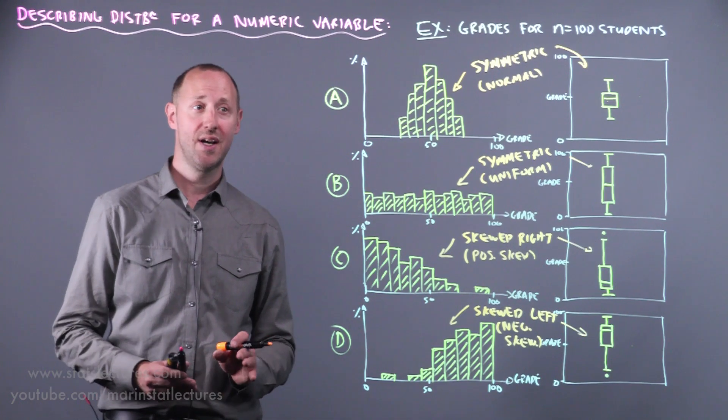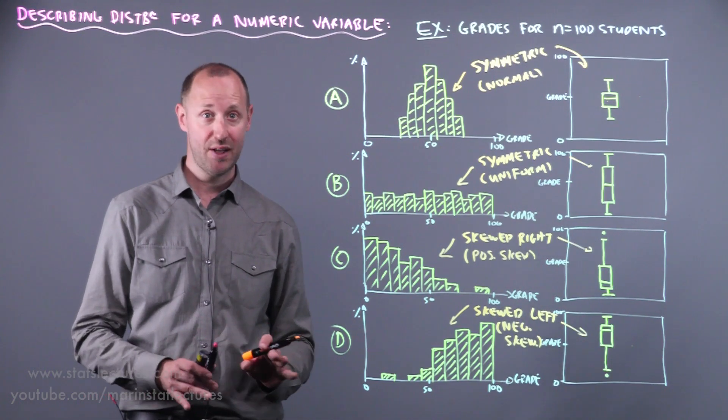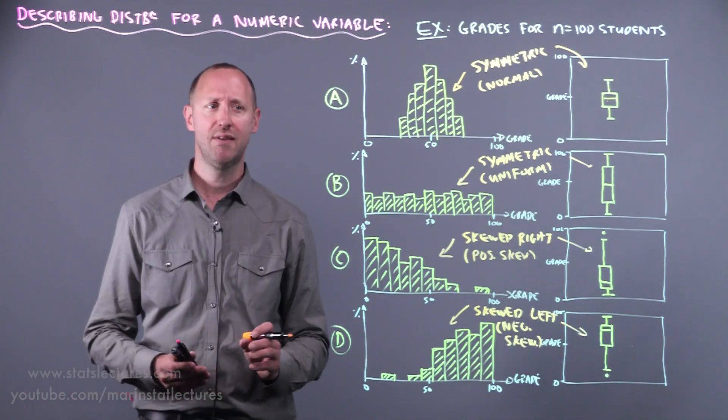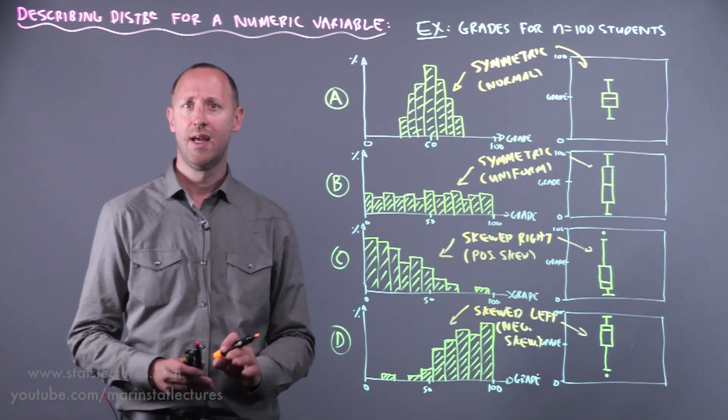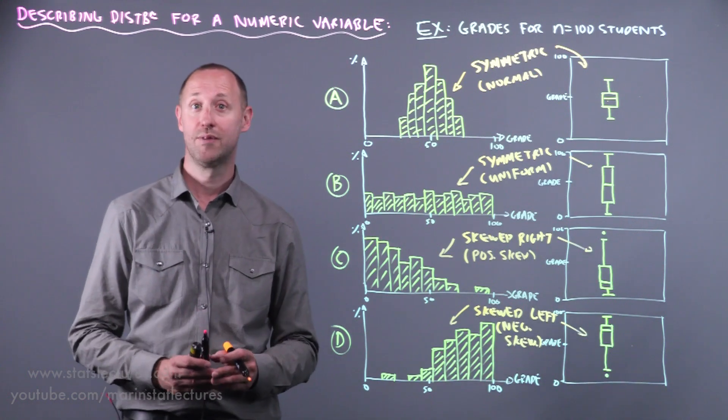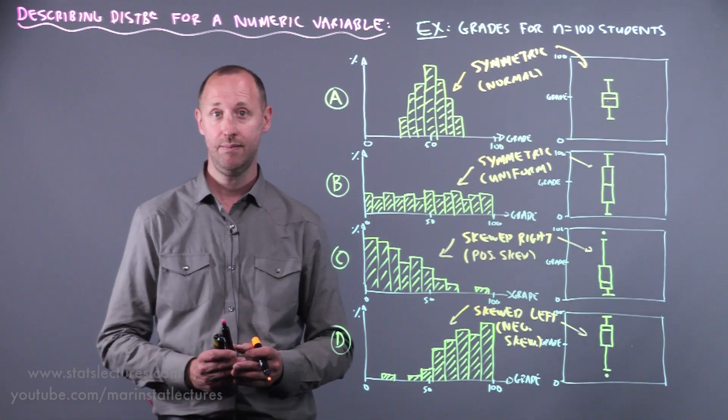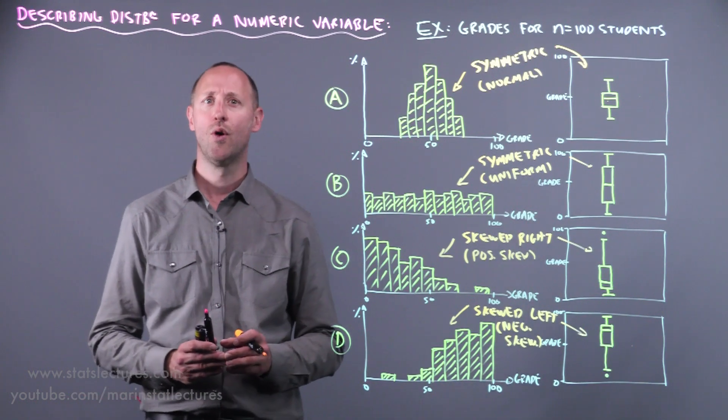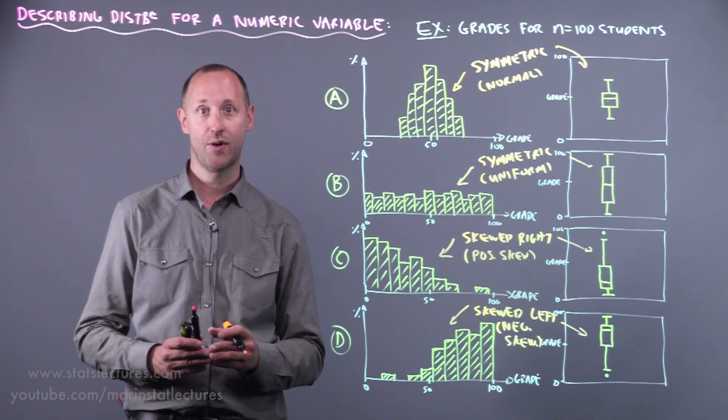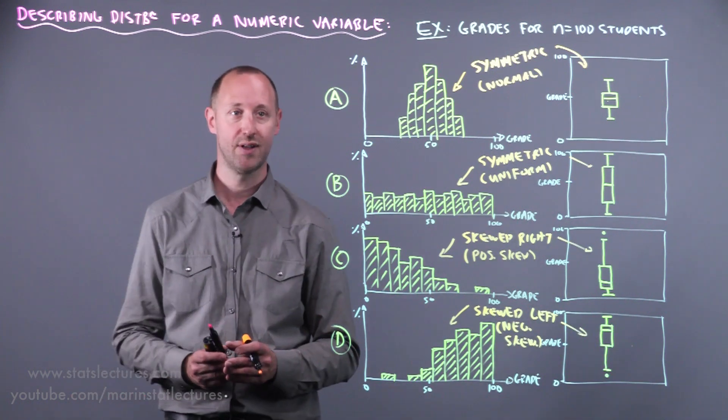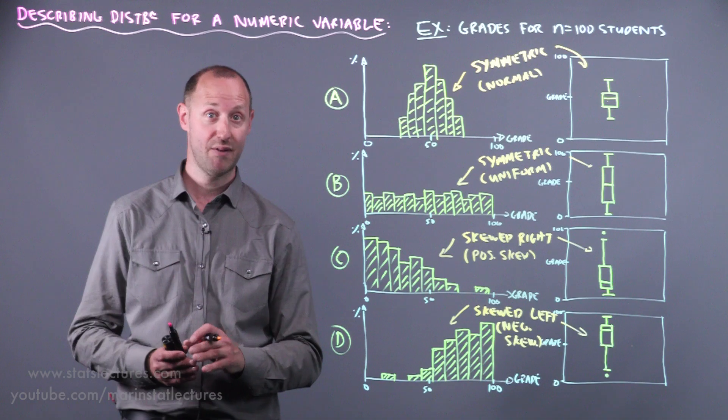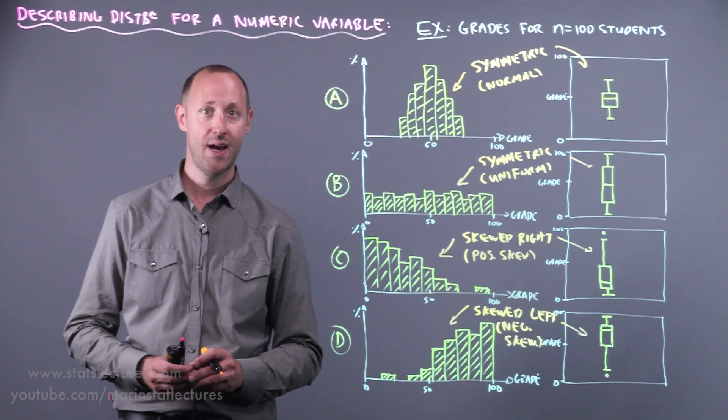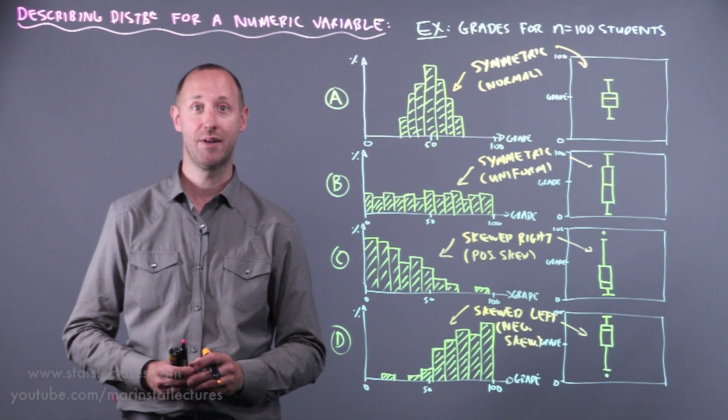Now often it's good to try and think about the shape you'd expect for a distribution of a variable when taking a sample before collecting or exploring the data. So I'm going to give you three examples to think about. Suppose we take a sample and record income of individuals, or we record the heights of an adult population, or maybe record class grades reported as percentages again for a class. So it's good to think about what shape would you expect for the distribution of these variables before collecting them.